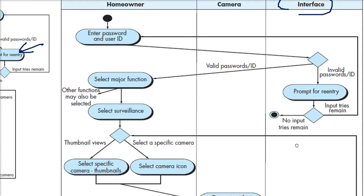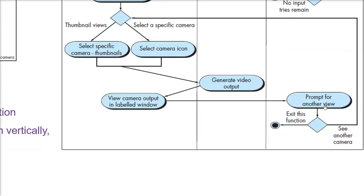But it will go to the interface because the prompt will come in the user interface. Prompt for another view. And if see another camera, it will again go back to that diamond. Otherwise, it will exit this function. So this is the work of interface.